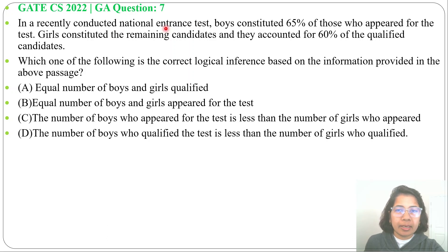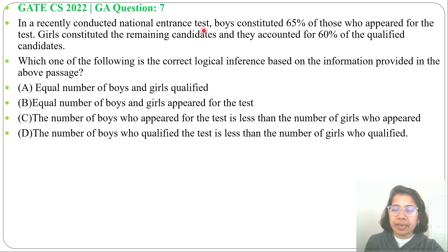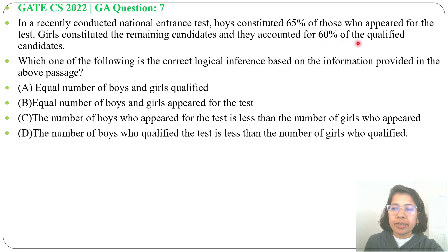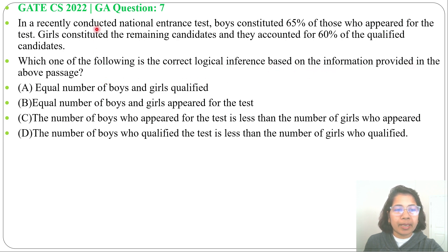Let's solve one previous question of general aptitude. This question was asked in GATE CH 2022 GA question number 7. In a recently conducted national interest test, boys constituted 65% of those who appeared for the test. Girls constituted the remaining candidates and they accounted for 60% of the qualified candidates. Which of the following is the correct logical inference based on the information provided?